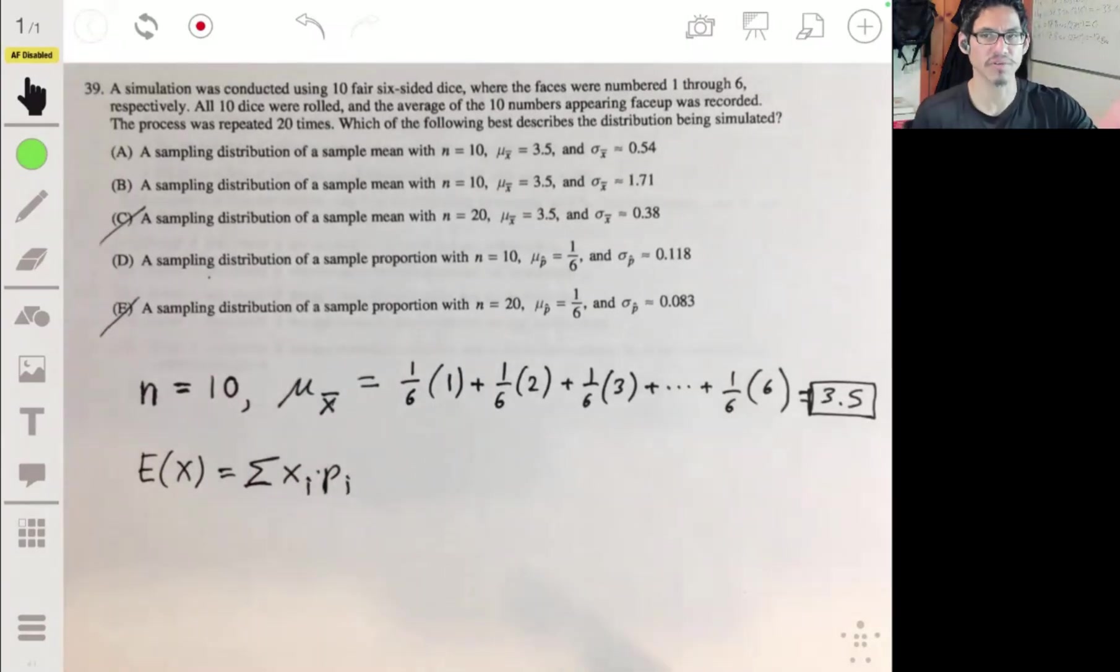The Xi's are like one, two, three, four, five, and six. And the Pi's are the one-sixth.